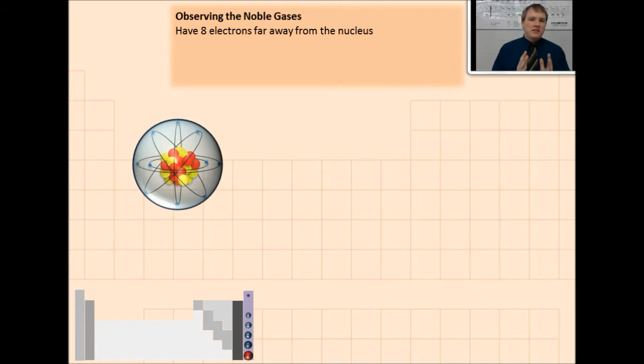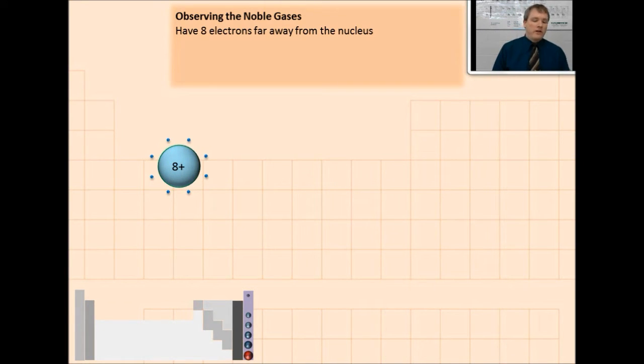First off, an atom is a noble gas if it has eight electrons in its outer shell far away from the nucleus. And if you look inside neon, you can see that neon has that. There are eight electrons that are far away from the nucleus in this atom. I can represent this another way by just showing you the inner eight-plus core of all of those protons, neutrons, and inner electrons, and then just those eight electrons on the outside.